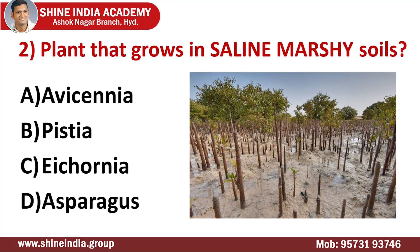The second question: the plant that grows in saline, marshy soils. The answer is Avicenia. The Avicenia plants are very well decorated. Common name is white mangrove, which is extremely widespread along the coast of eastern Africa, islands of the Indian Ocean, Tropical Asia, and Australia. It may survive in any type of environment where frost may occur.